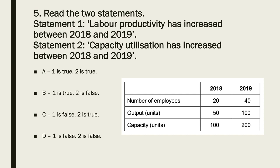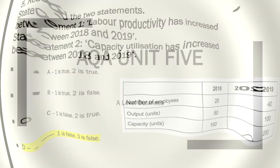Statement one — labour productivity: looking at the years, output divided by employees gives 2.5 units per employee in both years (50÷20 and 100÷40), so labour productivity has stayed the same, not increased. Statement two — capacity utilisation: actual output 50 vs capacity 100 gives 50% in 2018, and actual output 100 vs capacity 200 gives 50% in 2019 — also stayed the same. Both statements are false.